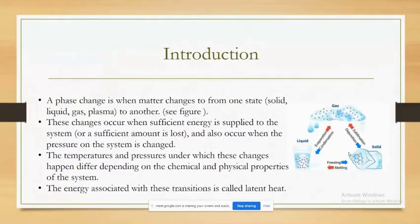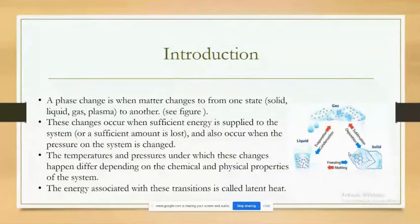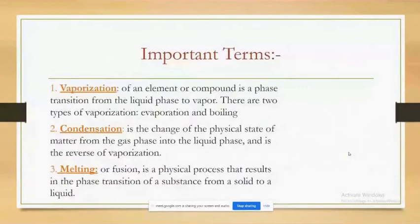occur when the pressure on the system is changed. The temperatures and pressures under which these changes happen differ depending on the chemical and physical properties of the system. The energy associated with these transitions is called latent heat.